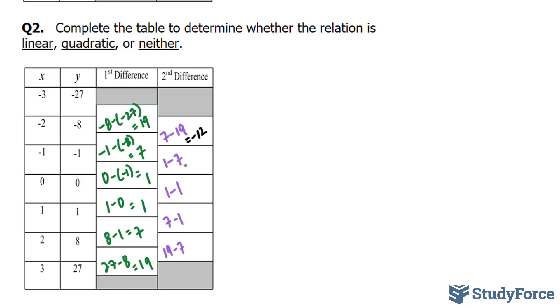Subtracting these two, we get negative 12, negative 6, 0, positive 6, and positive 12. You'll notice that this column shows an inconsistency of differences. Therefore, this table of values represents neither linear nor quadratic.